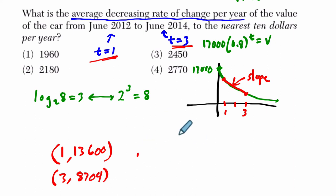How do we do that? Slope is delta Y over delta X or the output subtracted. F of one, the value after one year minus F of three, or just the value of the car after three years, divided by one minus three, which is negative two.